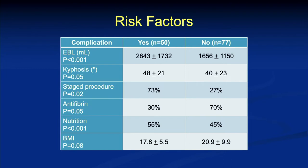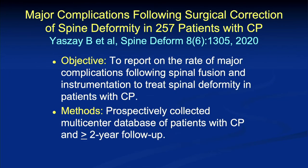When we looked at potential risk factors for these complications, not surprisingly, those patients that had complications had higher blood loss. They tended to be more kyphotic — we'll come back to that. Staged procedures were a risk factor, possibly due to longer hospital stays increasing opportunities for iatrogenic infection or pulmonary issues. Nutrition and BMI were also factors, and we'll cover many of these as we go through the talk.